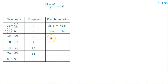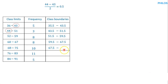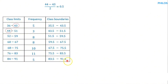Continuing: 52 minus 0.5 gives 51.5, and adding 0.5 to 59 gives 59.5. Then 60 minus 0.5 gives 59.5, and 67 plus 0.5 gives 67.5. Then 68 minus 0.5 is 67.5, and 75 plus 0.5 gives 75.5. Then 76 minus 0.5 is 75.5, adding to the upper limit gives 83.5. Finally, 84 minus 0.5 is 83.5, and 91 plus 0.5 gives 91.5.